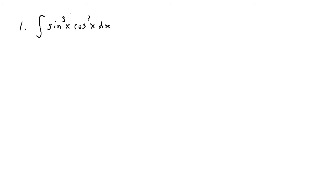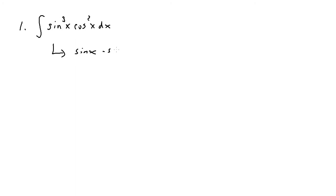Whenever a trig function is taken to the third power there's a special way to evaluate. I'm going to focus on rewriting sine cubed of x. I can rewrite sine cubed of x as sine of x times sine squared of x. Now sine squared of x can be rewritten as 1 minus cosine squared of x.